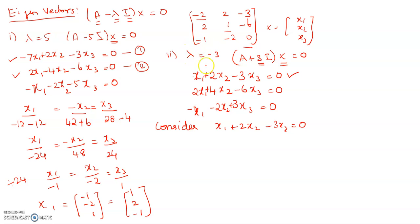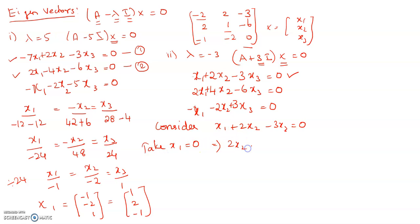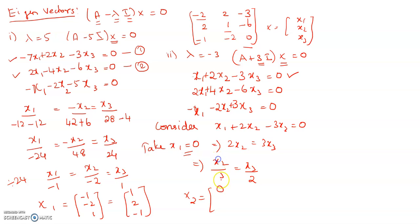All three equations are identical. We consider only the first equation: x1 plus 2x2 minus 3x3 equals 0. Since we have one equation and need two eigenvectors, set x1 equals 0. Then 2x2 equals 3x3, implying x2 over 3 equals x3 over 2. Therefore, the second eigenvector is (0, 3, 2).